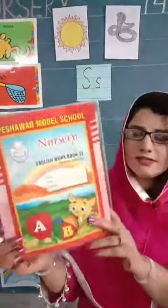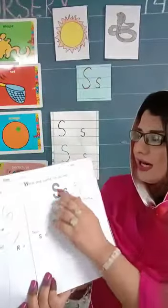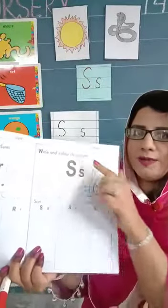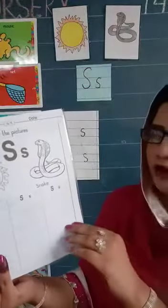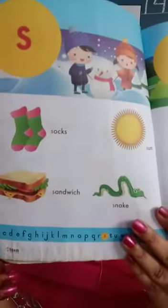This is our final term notebook of English and we have to write page number 15. Look at here — just one page of S. Okay, Nursery class. Now we will move to our reader book and page number 24. Look at here, page number 24. Alphabet S is on page number 24.